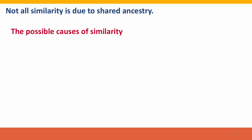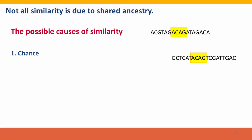Not all similarity is due to homology, and that's part of why there's this confusion. Similarity can simply be due to chance. This is especially true for relatively simple features. For example, if we're comparing just short segments of two DNA sequences, we'll often find short strings of bases that are the same simply by chance, with no evolution or ancestry involved.